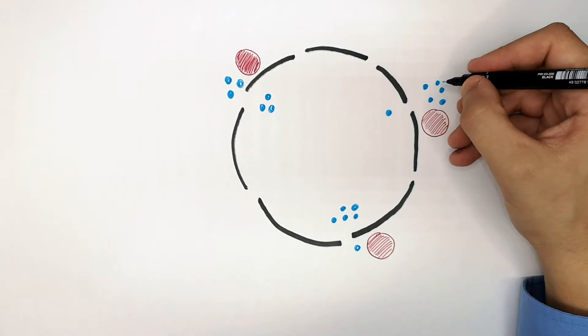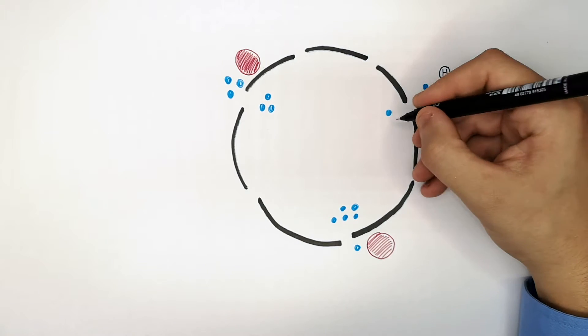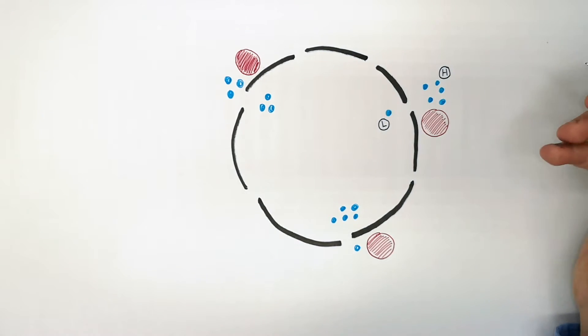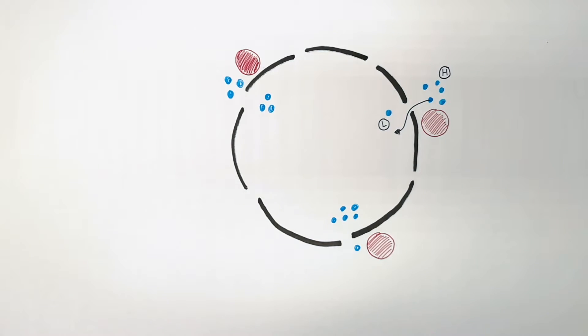As you can see here, I'm going to highlight on the outside of the cell that there is a high concentration because there are five water dots. And on the inside, there's a low concentration. So water is going to move from a high to low concentration.